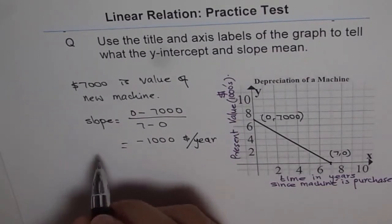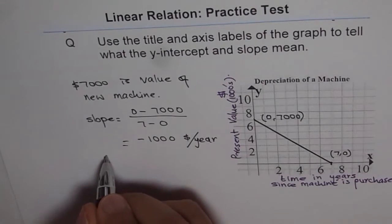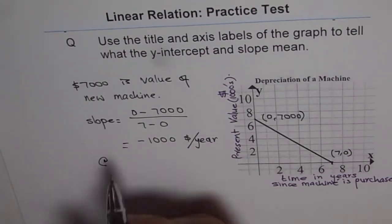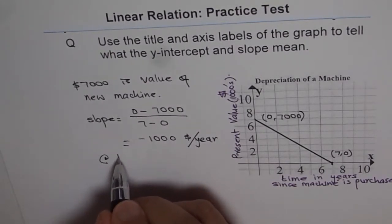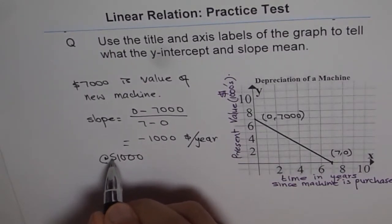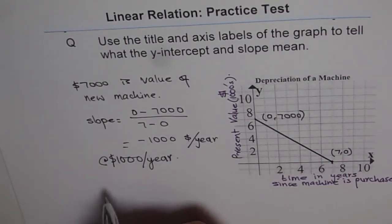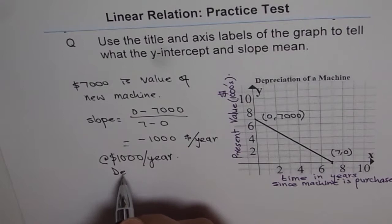So the slope here gives you the rate at which the value of the machine is decreasing every year. So it is decreasing at the rate of $1,000 per year. The slope here gives you the depreciation rate.